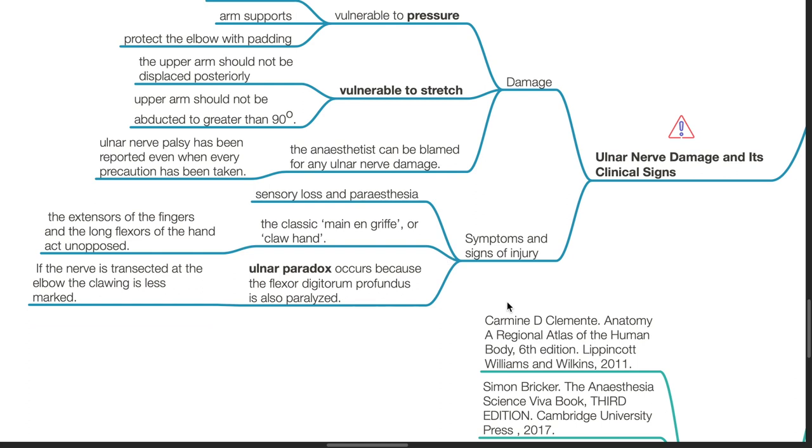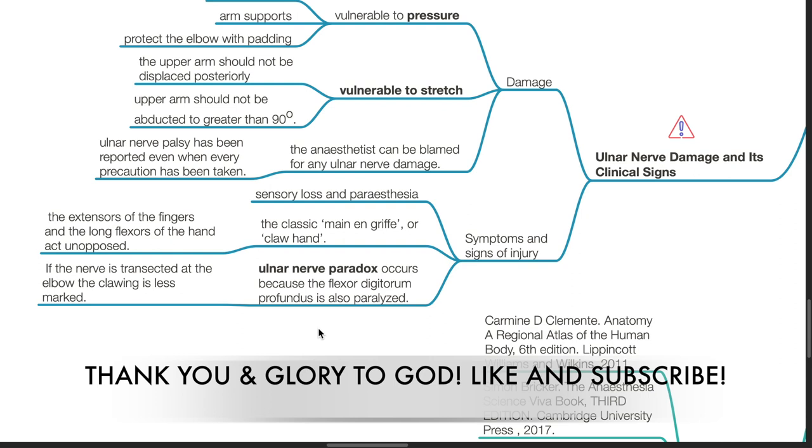Symptoms and signs of injury include sensory loss and paresthesia in the ulnar nerve distribution, and the classic claw sign where the extensors of the fingers and the long flexors of the hand act unopposed. The ulnar nerve paradox occurs because the flexor digitorum profundus is also paralyzed. If the nerve is transected at the elbow, the clawing is less marked.